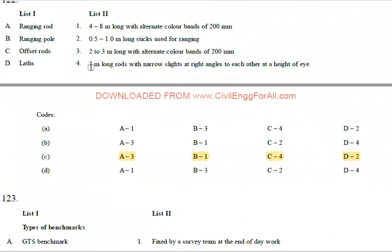First, the ranging rod — it is 2 to 3 meters long with alternate color bands of 200 mm each. The ranging pole is longer, at 4 to 8 meters long, also with alternate bands of 200 mm.